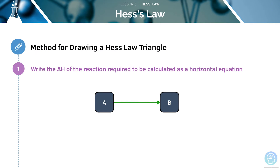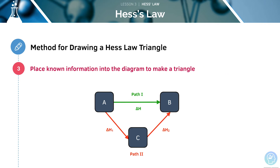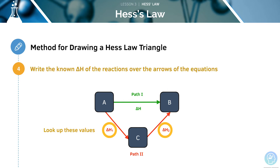First of all, we should write down the enthalpy change of the reaction, as you need to calculate the horizontal equation. Next, we should write the symbol delta H near the arrow, as this is the unknown enthalpy change you want to calculate. Then we can put in the other bits of information we know in order to make a triangle. The other bits of information will consist of the enthalpy changes of formation or combustion of either the reactants or the products. After this, we can write down the known enthalpy changes over the arrows of the equations by looking at the values provided in the question.